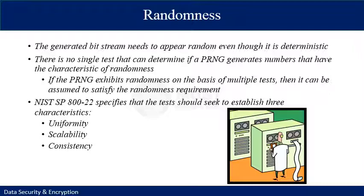Randomness is desired in pseudo-random number generators — the generated bit stream needs to appear random even though it is deterministic. There is no single test that can determine whether a PRNG generates numbers with characteristics of randomness. If the PRNG exhibits randomness on the basis of multiple tests, it can be assumed to satisfy the randomness requirement. NIST SP 800-22 specifies that tests should seek to establish three characteristics of a PRNG's deterministic algorithm.